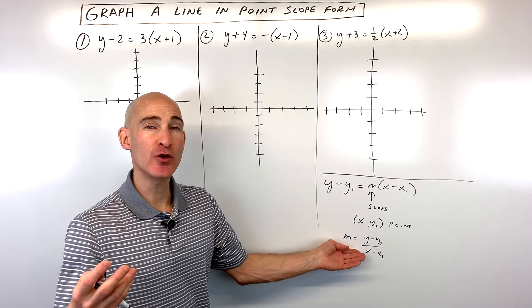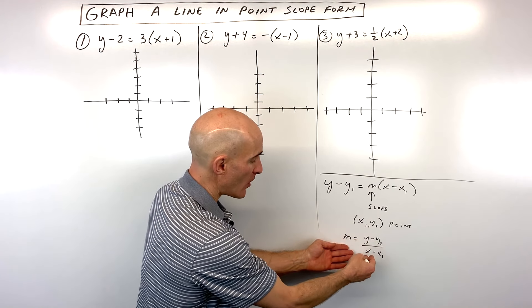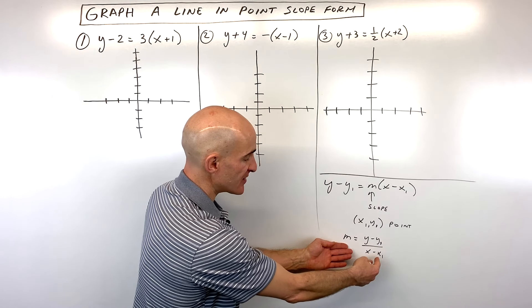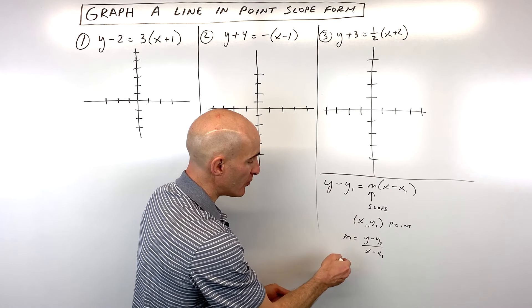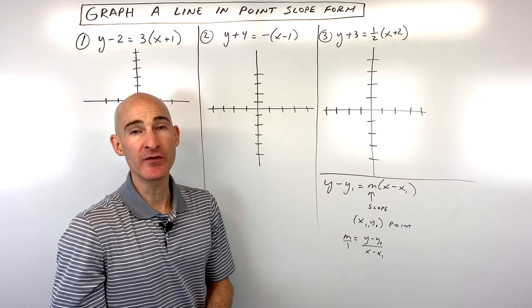If you want to understand where the equation comes from, you can look at the slope formula, which is y minus y1 over x minus x1, the difference in the y's over the difference in the x's. And if you cross multiply, think of m as m over 1, you're going to get the point slope form of the equation of a line.